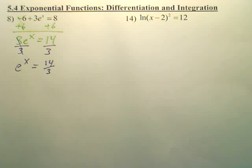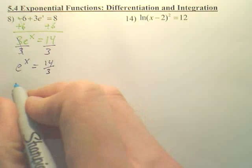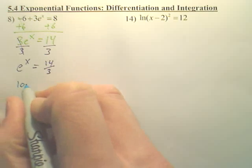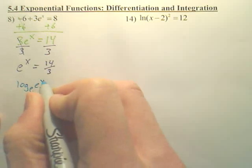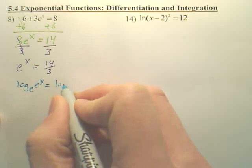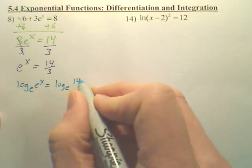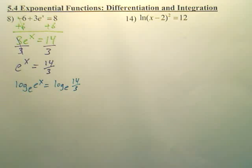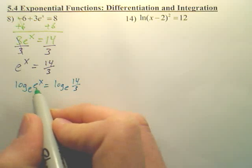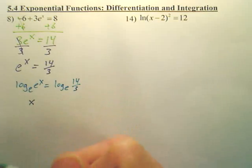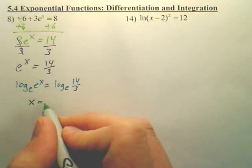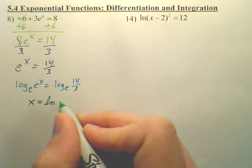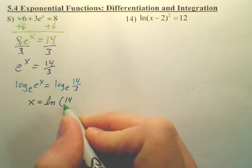Then you have two different ways to solve this. For some of you, you want to log both sides. So you're going to get log base e, e to the x equals log base e, 14 over 3. Log base e is ln. And from there, you understand this cancels, leaving you just simply x. And this becomes ln 14 over 3.